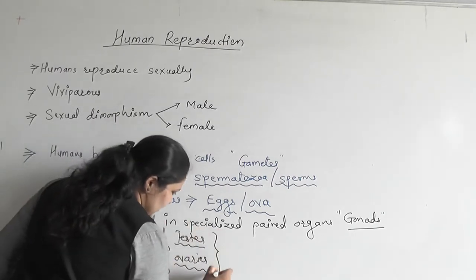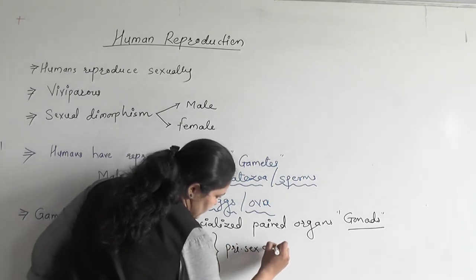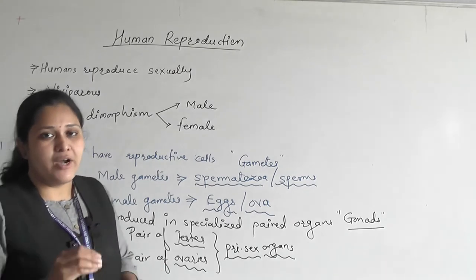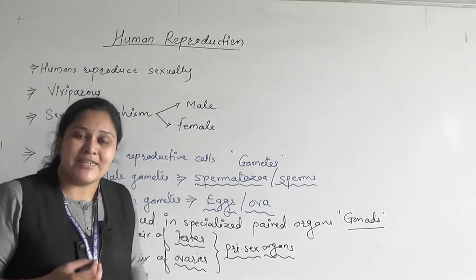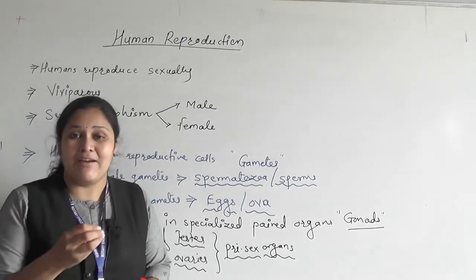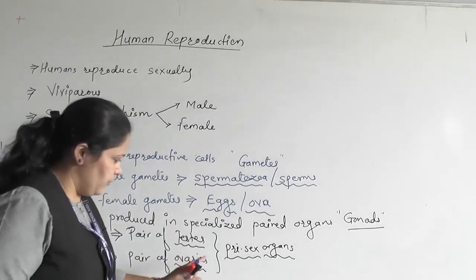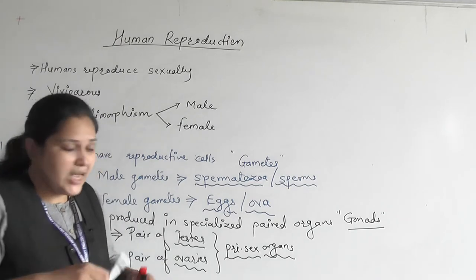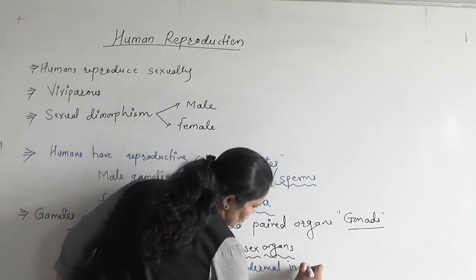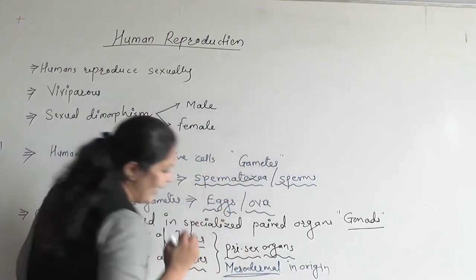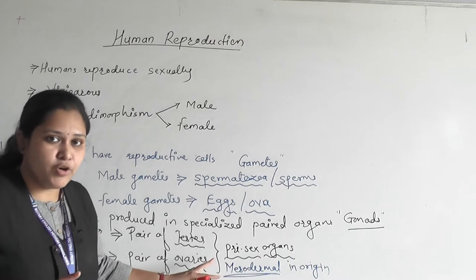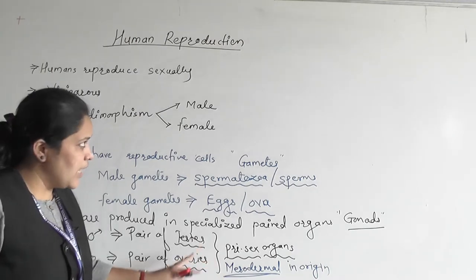These gonads are the primary sex organs. Primary sex organs are the gonads which produce gametes and male and female hormones. Remaining structures are called secondary sex organs. Testes and ovaries, the primary sex organs, are mesodermal in origin. So you have to remember: primary sex organs are mesodermal in origin.